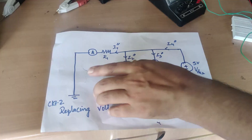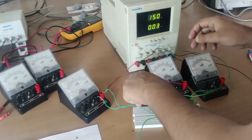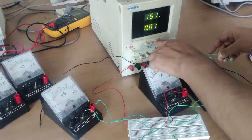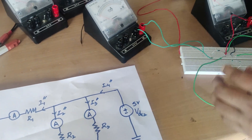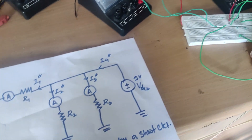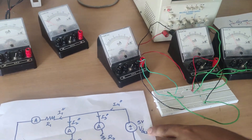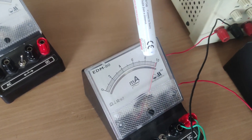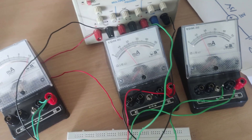Now we remove the 15-volt source and restore the 5-volt source. The circuit now has the 5-volt source active and the 15-volt source replaced by a short circuit. I reconnect the 5-volt source — its positive here and negative connected. The results show: current i1-double-dash is 9 milliamps, and currents i2-double-dash and i3-double-dash are equal in magnitude at 14 milliamps each.